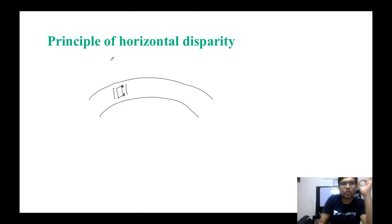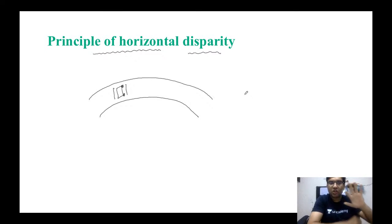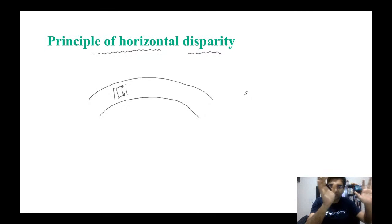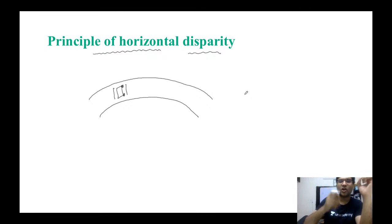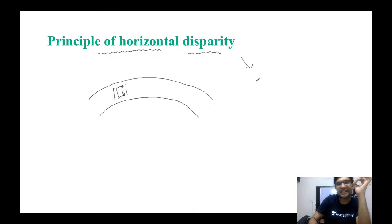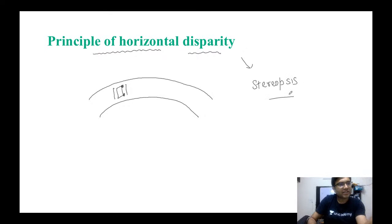This is called the principle of horizontal disparity. In Panum's area of fusion, the points are horizontally different from each other — this is called the principle of horizontal disparity, and it is basically responsible for stereopsis, that is, depth perception.